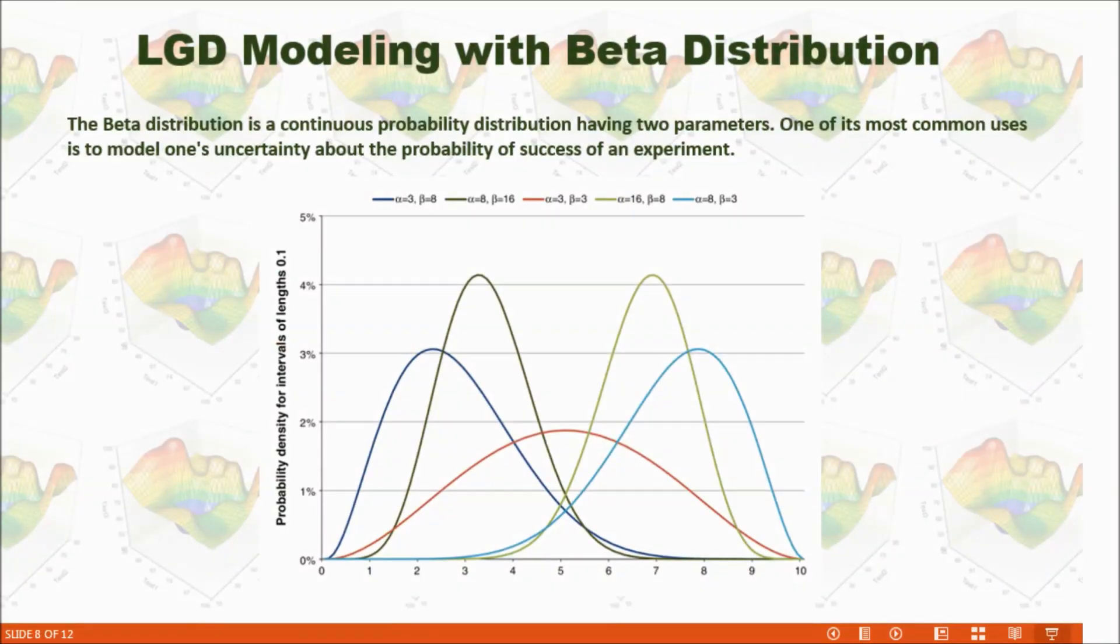Now we will decide LGD according to beta distribution. What is beta distribution? Beta distribution is a continuous probability distribution having two parameters, alpha and beta.